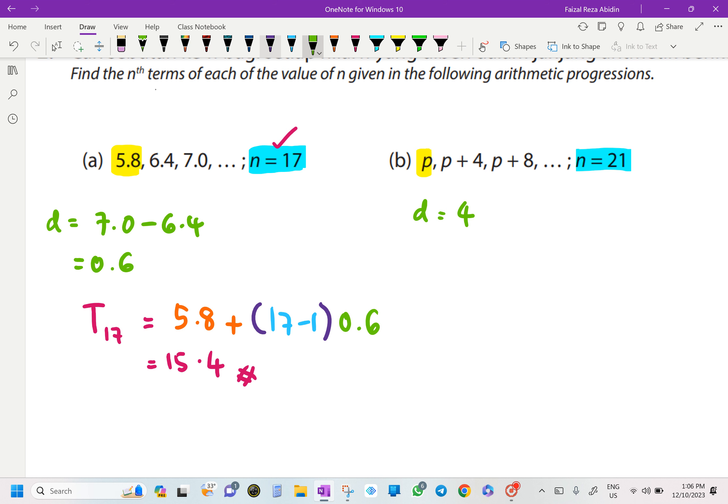So straight away, if you are finding the 21st term over here, you are going to get P plus, so we are going to have 21 minus 1. So you are going to get 20 times 4. So 20 times 4 is going to be 80, 80 plus P. So the answer you are going to get is P plus 80. That is going to be your 21st term.